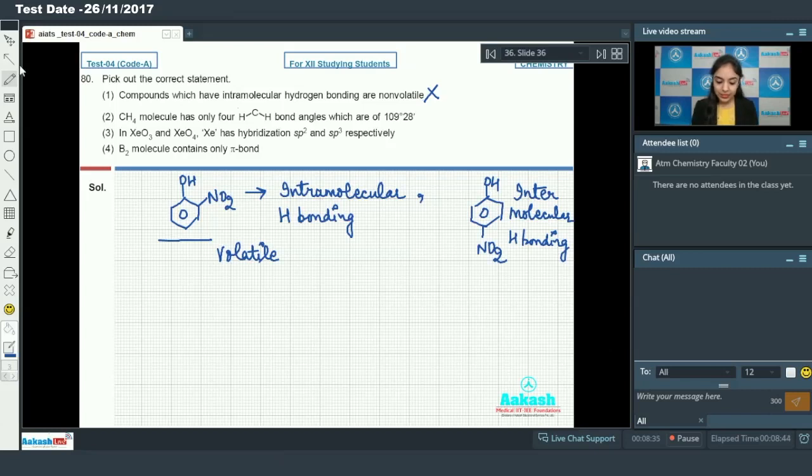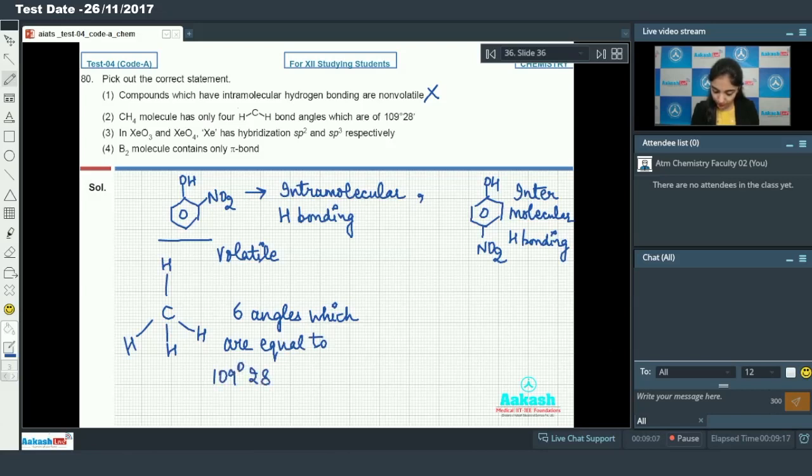Now we have the second statement which says that the CH4 molecule has only 4 HCH bond angles which are of 109 degree 28 minutes. We have a CH4 molecule that is a tetrahedron. And it has 6 angles which are equal to 109 degree 28 minutes. Not the 4 angles. So this option is also incorrect.